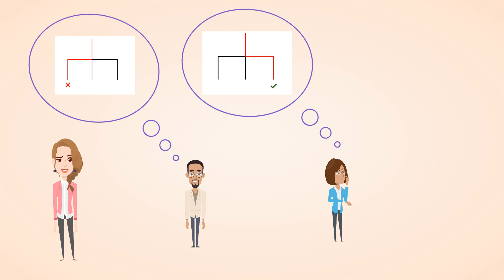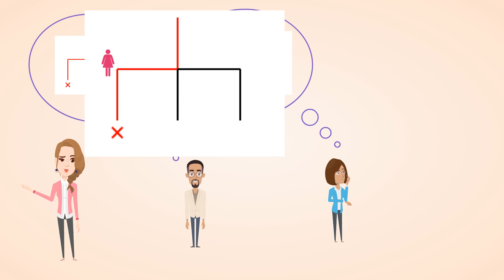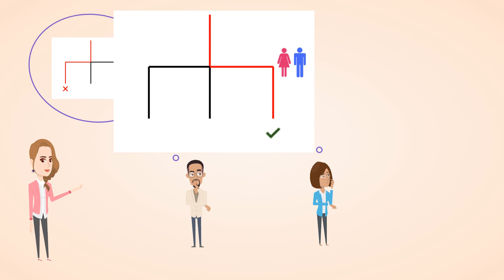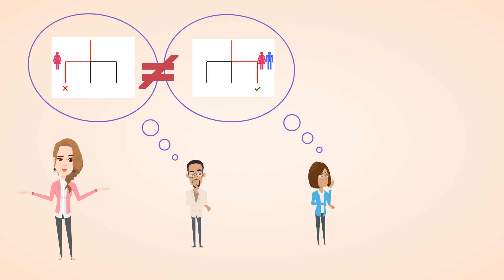For example, one study might have only female participants, while the next study has male and female participants. These two studies likely won't get the same answer to the question.